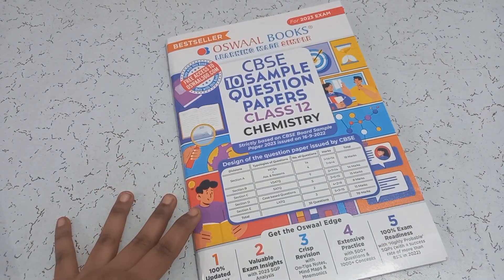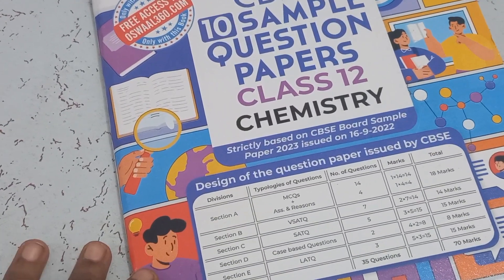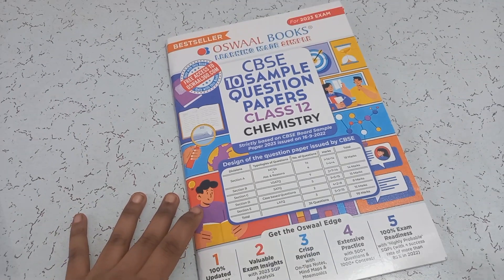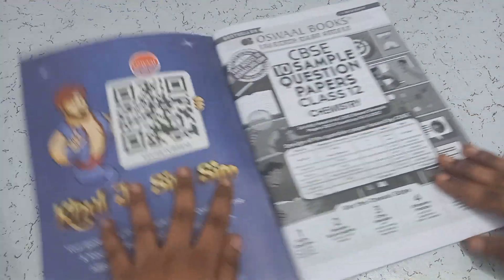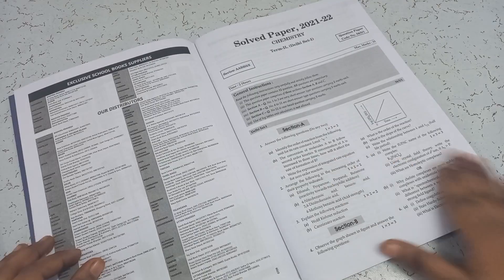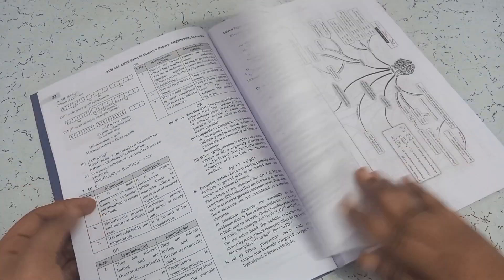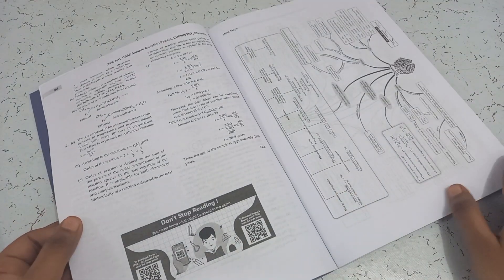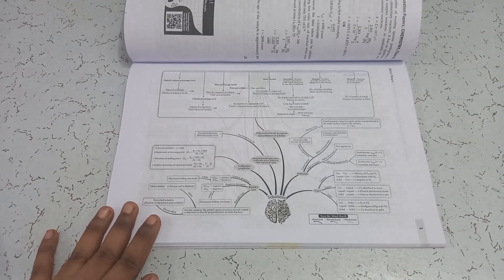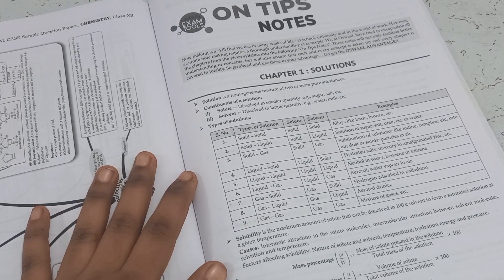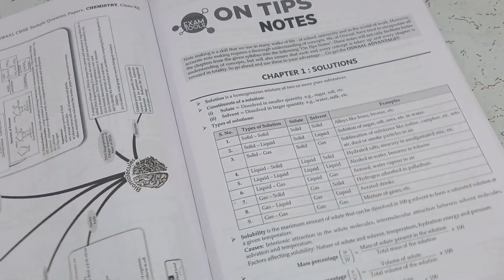Now, both the books Chemistry and Maths are exactly the same pattern like physics. But yeah, let's just see a little glimpse of it. First, it too contains solved paper from 2022 and then mind maps. Then again, the very important part of this book, one-tip notes.